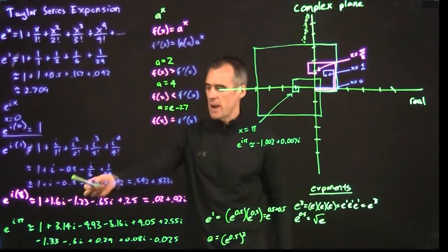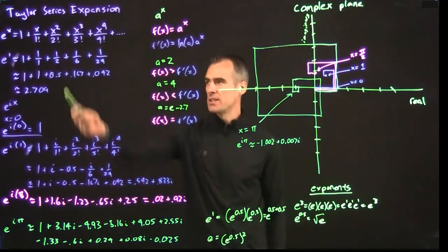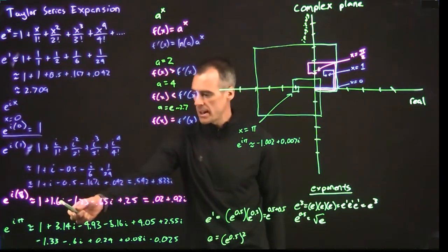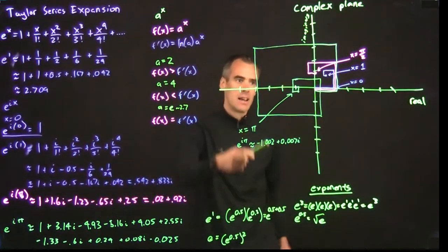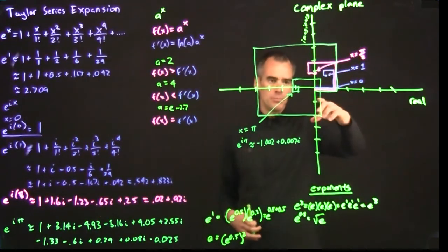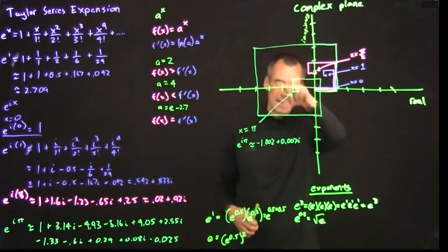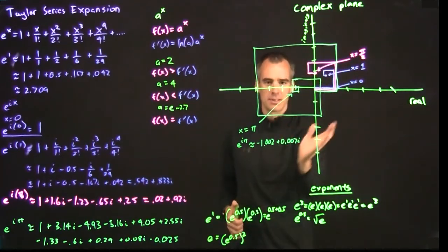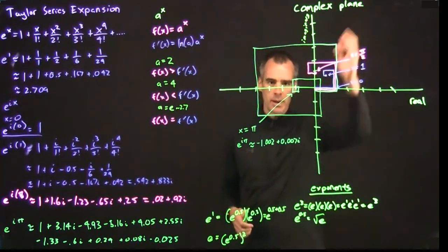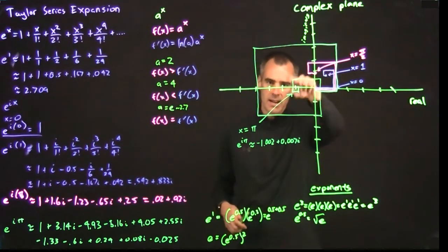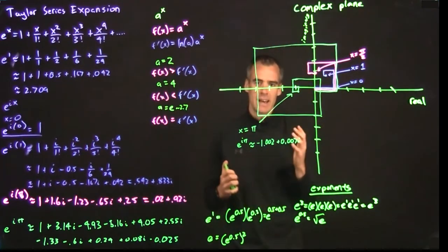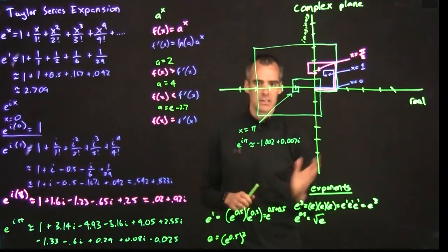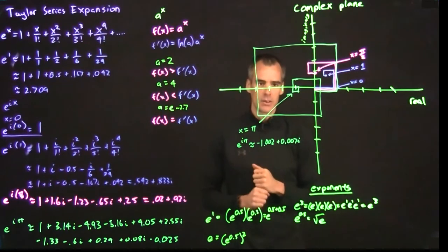But why is it that e to the ix does not keep expanding like that? Well, you can see on here because we're adding and subtracting terms. We're not just adding them like we are up here. Now we're adding i terms and then we subtract i terms. We're going to add the real values and then subtract and we keep going back and forth and we're spiraling. Instead of just going bigger, bigger, bigger, we're just getting tighter and tighter, spiraling in. So that's why e to the ix doesn't actually expand exponentially like e to the x does. It spirals in instead.